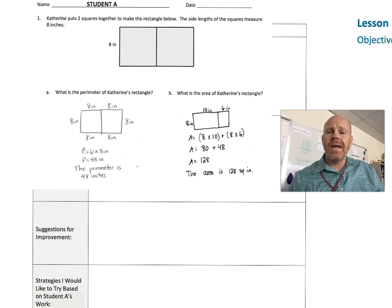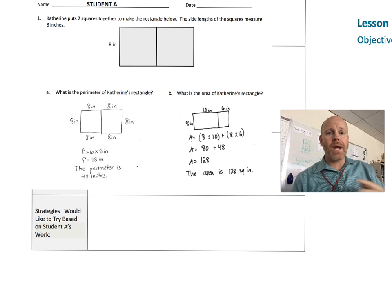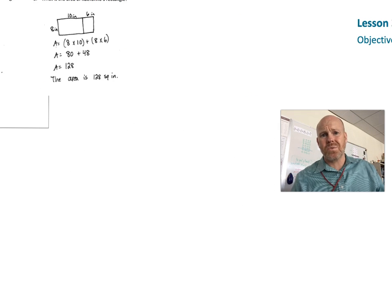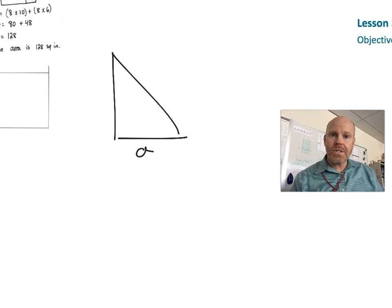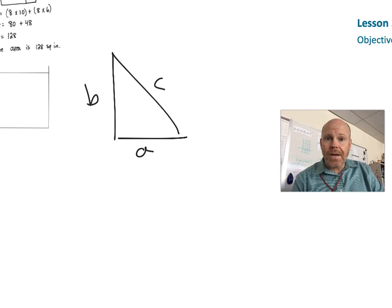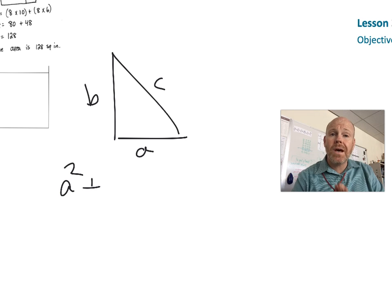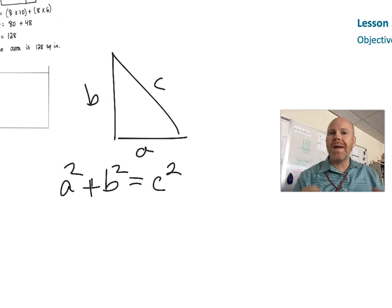As an example, the Pythagorean theorem - you know the Pythagorean theorem, a squared plus b squared equals c squared, pretty straightforward, right? Except mathematicians have proven the Pythagorean theorem in over 300 different ways.